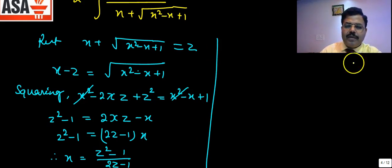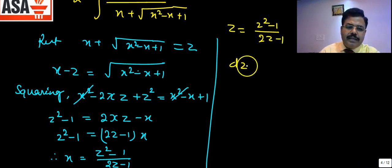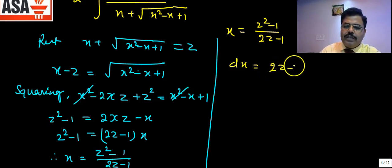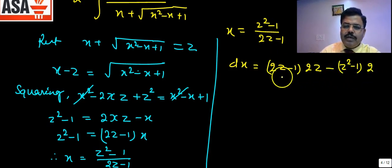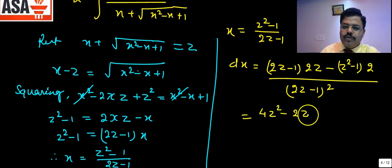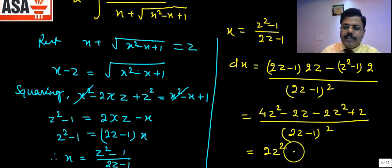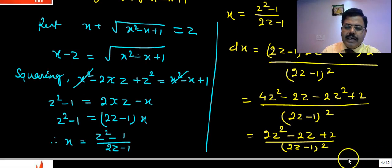After simplification: x(2z-1) = z² - 1, so x = (z²-1)/(2z-1). Now we calculate dx using the quotient rule: dx = [(2z)(2z-1) - (z²-1)(2)] / (2z-1)² dz = (2z² - 2z + 2)/(2z-1)² dz.